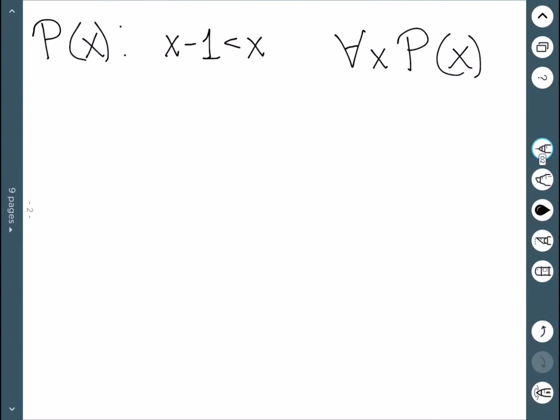Let's look at an example. Here P(x) is x+1 < x, and I want to know if this is true for all x P(x). You can try some numbers. Try 0—that gives us -1 < 0, which is true.